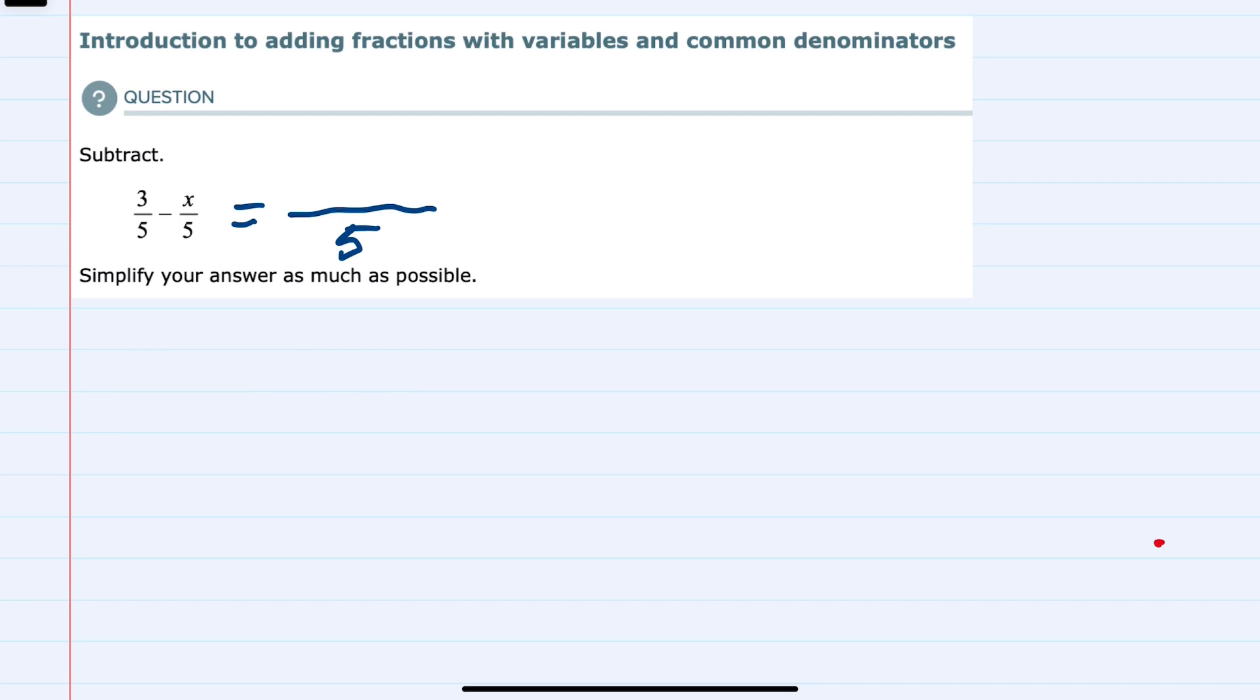So here we have a common denominator. We're going to keep that denominator. And in the numerator, we still have the 3, and we are subtracting x, and we are told to simplify our answer as much as possible.